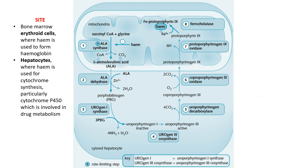Heme synthesis occurs in the bone marrow in the erythroid cells, where it is used to form hemoglobin. It also occurs in the liver, where it is used for synthesis of cytochromes, especially the cytochrome P450 system which is involved in drug metabolism.